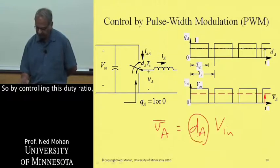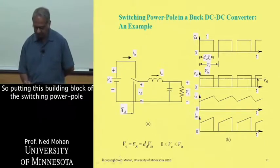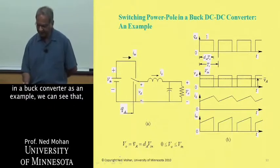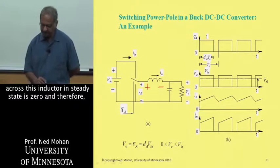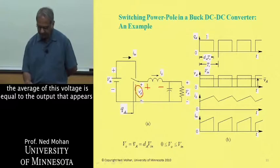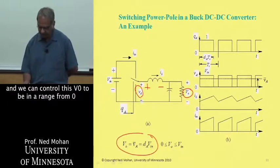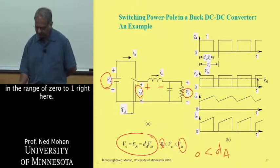So by controlling this duty ratio, we can control the output voltage. So putting this building block or the switching power pole in a buck converter as an example, we can see that later on we'll see that the average voltage across this inductor in steady state is zero, and therefore the average of this voltage is equal to the output that appears, and that is shown by this equation here. And we can control this V zero to be in a range from zero to the input voltage V in here. And of course, dA then is in the range of zero to one right here.